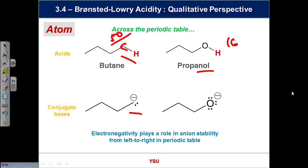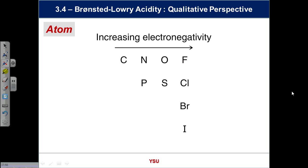The idea here is the charge is better stabilized by the more electronegative element, and the proton in the acid is more positive because of the more electronegative element. Going across the periodic table, that's a general trend. So CH bonds are not acidic at all so far. HF is quite strong because of the electronegativity difference.